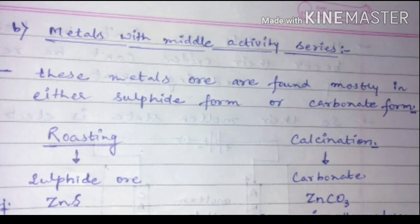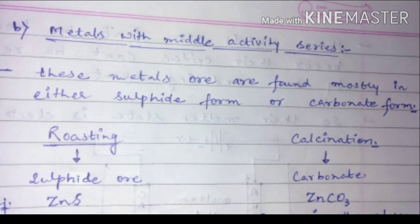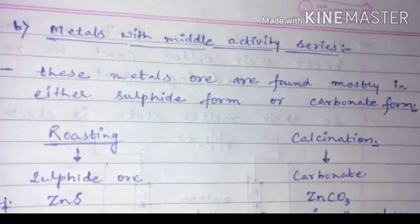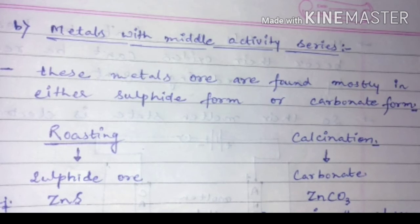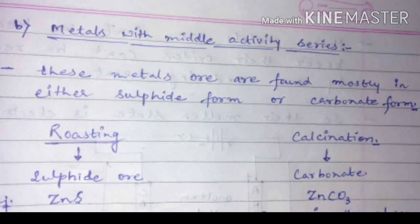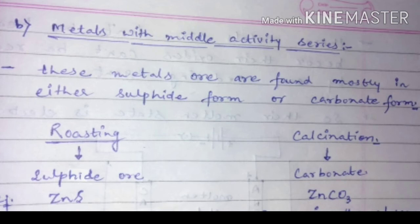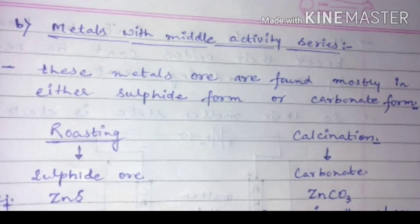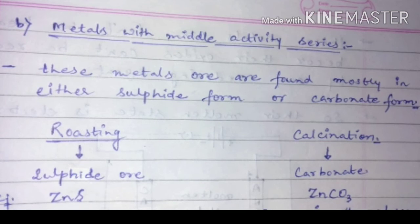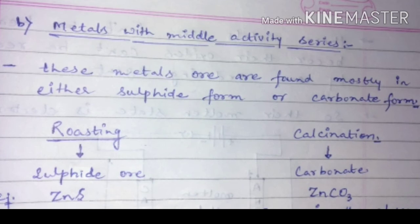The second category is metals which are in the middle of the reactivity series, such as iron and zinc. These metals are mostly found in the form of sulfide ores or carbonate ores. Because they are present in different kinds of ores, we need different kinds of processes to separate them.